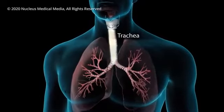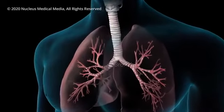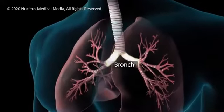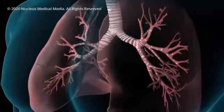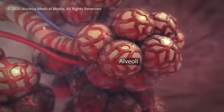Normally, as you breathe, air moves freely through your trachea or windpipe. Then, through large tubes called bronchi, through smaller tubes called bronchioles. And finally, into tiny sacs called alveoli.